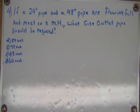Okay, problem number four from the wastewater collection math book on SewerGeek.com. The problem reads: if a 24-inch pipe and a 48-inch pipe are flowing full and meet in a manhole, what size outlet pipe would be required?